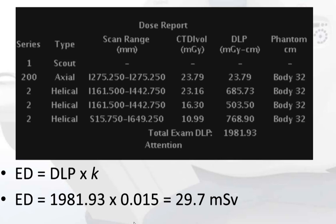For example, for a triple-phase liver, effective dose is DLP times the coefficient 0.015. So triple-phase, at approximately 10 mSv per phase times 3, is about 30 mSv — quite high.